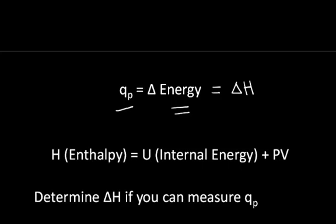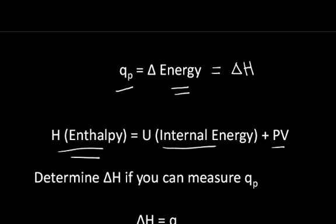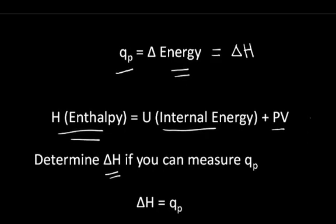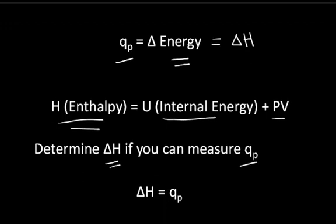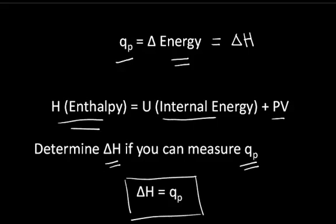Enthalpy is defined as internal energy plus the pressure of the system times the volume of the system. You can determine the change in enthalpy — never the absolute enthalpy — if you can measure the heat flow at constant pressure. So the change in enthalpy for some system is the heat flow at constant pressure.